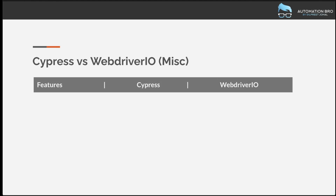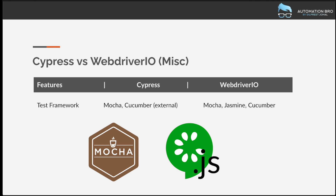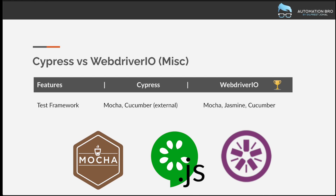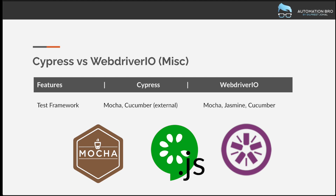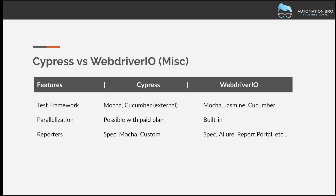Now for some miscellaneous features. For test frameworks: Cypress has built-in Mocha support, with Cucumber available via external plugin. WebDriver.io has Mocha, Jasmine, and Cucumber all built in. For parallelization, Cypress supports it only with a paid plan, while WebDriver.io has it built in. For reporting, Cypress offers spec, Mocha, and custom reporters, while WebDriver.io has spec, Allure, Report Portal, and around 10–15 different reporter options — giving you more choices.